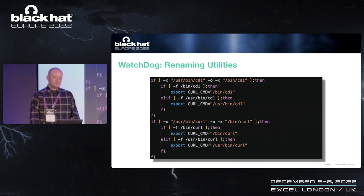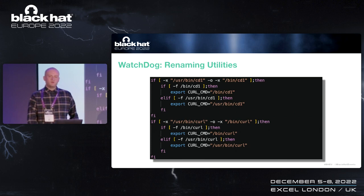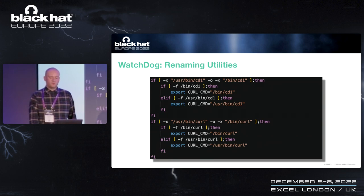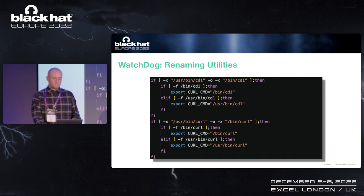We also saw curl renamed to cd1 in order to obfuscate its usage. The malware sets an environment variable with the path to the renamed version of curl, so that any attempts to retrieve additional payloads use cd1 and not the curl binary itself. If you're monitoring for invocations of curl, this is a way for an attacker to avoid generating an alert. This technique has also been observed when obfuscating usage of other data transfer utilities such as WGET.